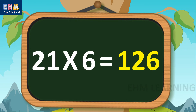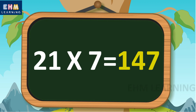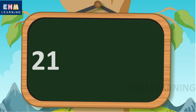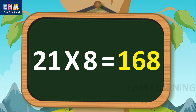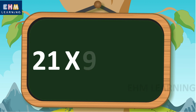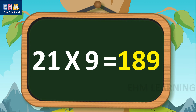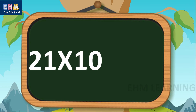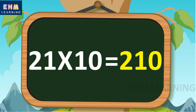21 sevens are 147. 21 eights are 168. 21 nines are 189. 21 tens are 210.